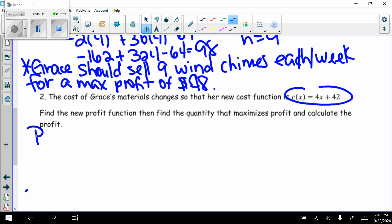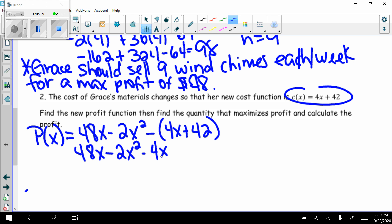So we already had the equation for profit. P(x) was equal to our revenue. Our revenue hasn't changed. It's still the 48x - 2x². Minus, now the cost has changed. The new cost is 4x + 42. So this is really 48x - 2x² - 4x - 42. My new profit function in standard form is negative 2x² + 44x - 42.